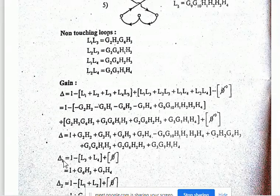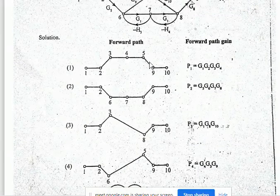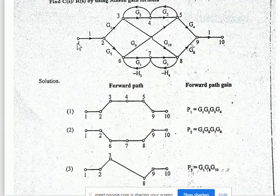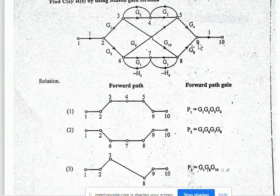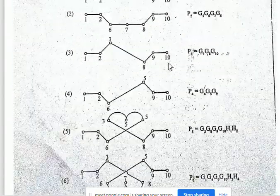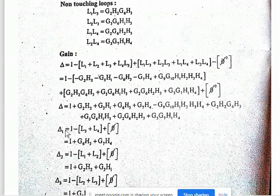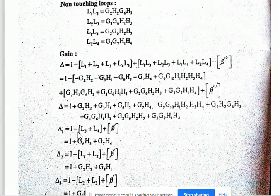For the first forward path (1→2→3→4→5→9→10), we need loops not touching this path. L3 and L4 are non-touching to this forward path. Delta 1 is written with those two loops. There are no pairs of non-touching loops among them, so that term is zero.